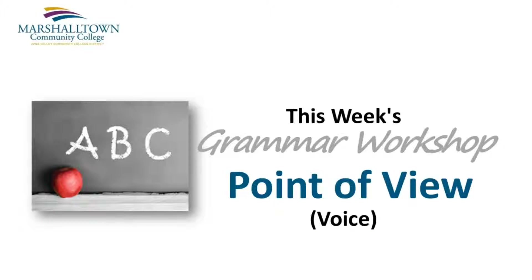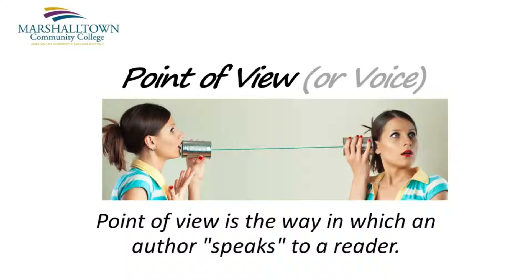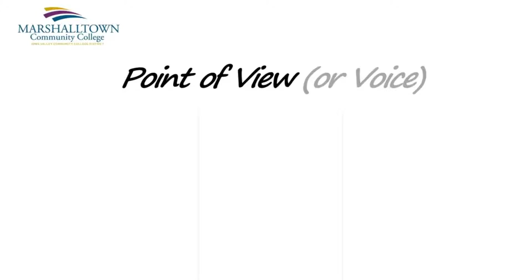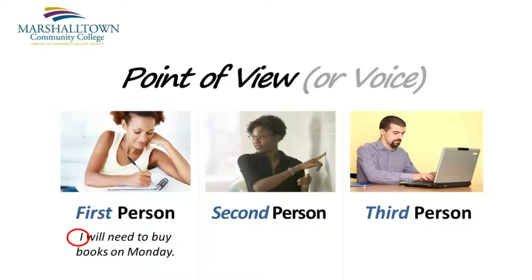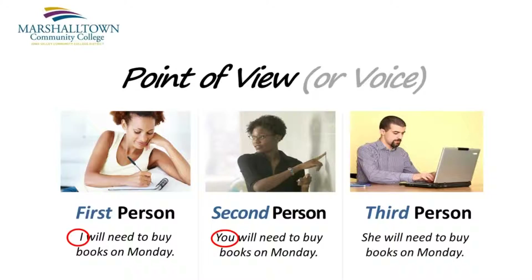The grammar workshop for this week is all about writing in a particular point of view or voice. Point of view is the way in which an author speaks to a reader, and there are three basic types of point of view that an author might use. In first-person writing, an author speaks as if he or she is having a face-to-face conversation with a reader. This type of writing includes words like I and we, often placed at the beginning of a sentence. In second-person writing, an author also speaks directly to a reader, but without referring to himself or herself in the conversation. This type of writing includes words like you and your. In third-person writing, an author speaks to no one directly, but refers to people, places, and things with words like he, she, or it.